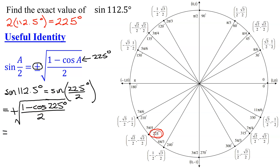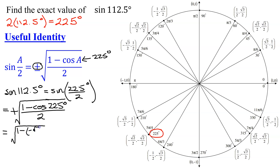So I'm going to have to pick the positive square root when I evaluate my answer. So I'm going to have the positive square root of 1 minus the cosine of 225 degrees, all divided by 2. Now, what is the cosine of 225 degrees? Remember, the cosine is the x-coordinate of points on the unit circle, so it's negative the square root of 2 over 2. So I'm going to have the square root of 1 minus a negative square root of 2 over 2, all divided by 2.